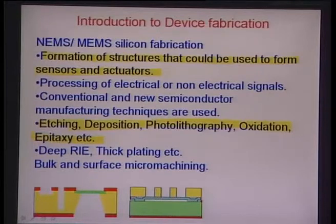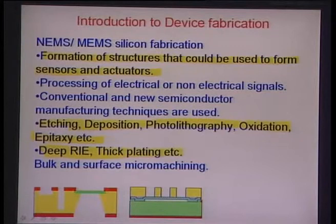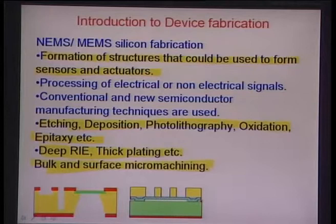There are also techniques particularly used for MEMS applications: thick plating, where you can make films more than a micron thick by electroplating onto a surface, and deep reactive ion etching (DRIE), where plasma is used to chemically etch silicon surfaces. Micro machining can be categorized into bulk and surface micro machining.